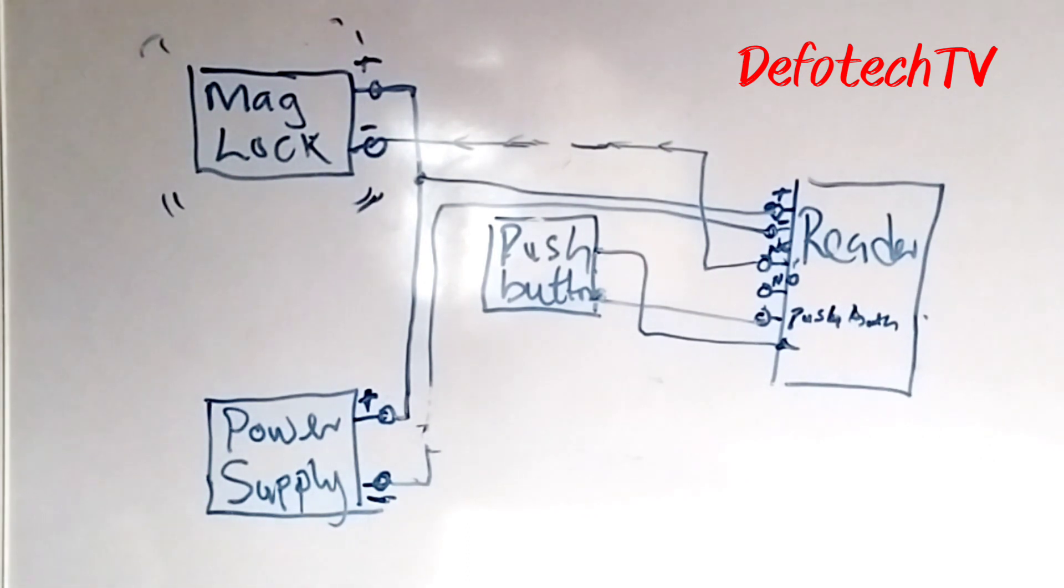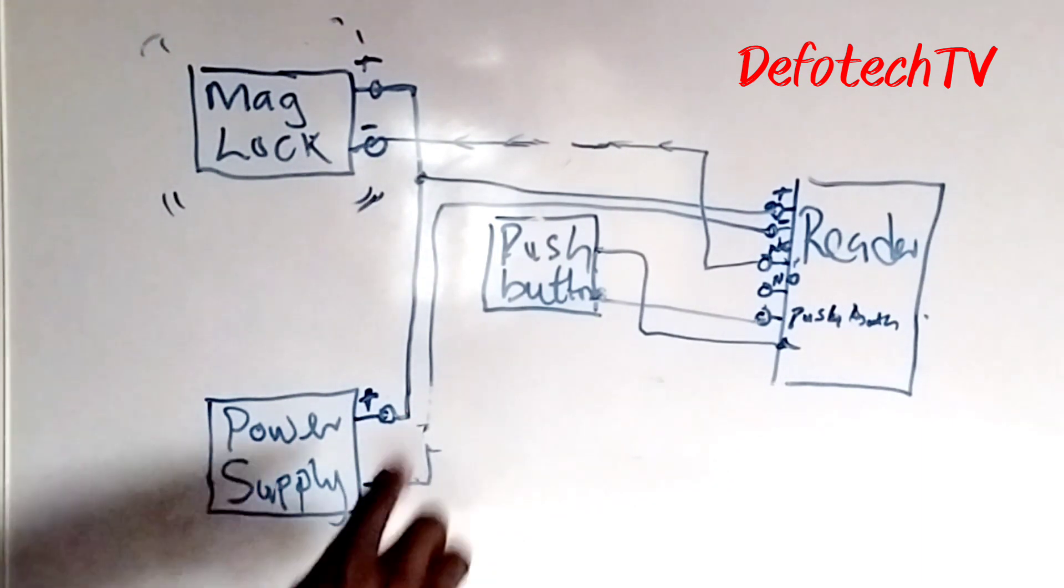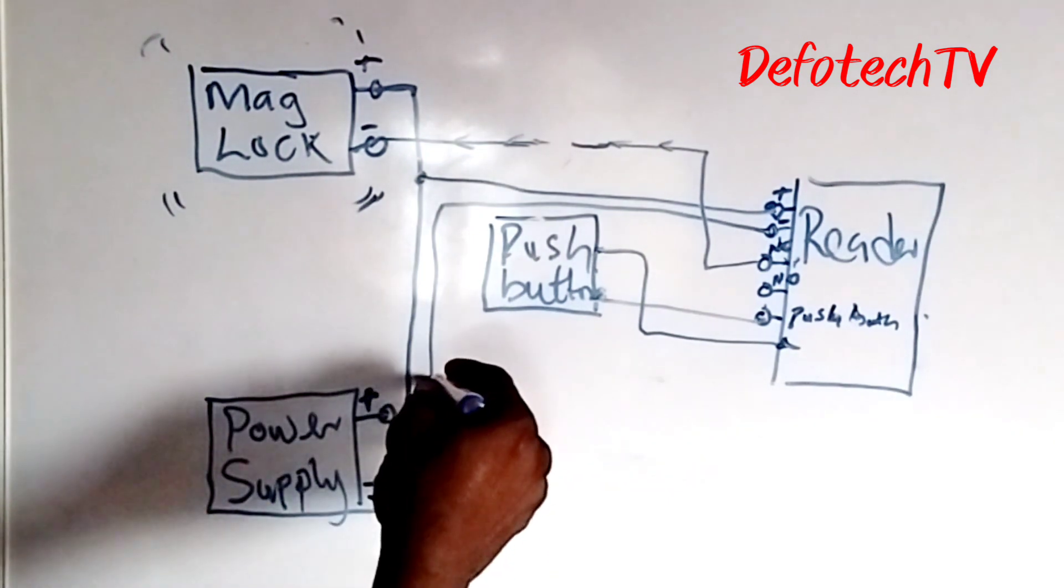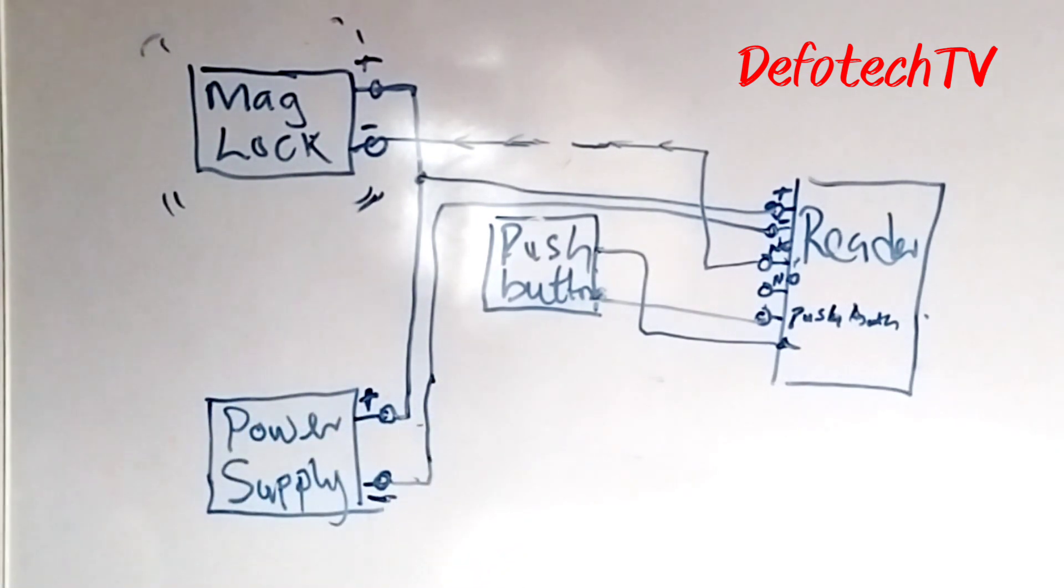Now, like I made mention, there are things you need to understand about access control, things that are needed for access control. Number one, I talked about the lock. You might try to visit the video and check more on that. So I talked about the lock, the magnetic lock, the push button, the power supply, and the reader.